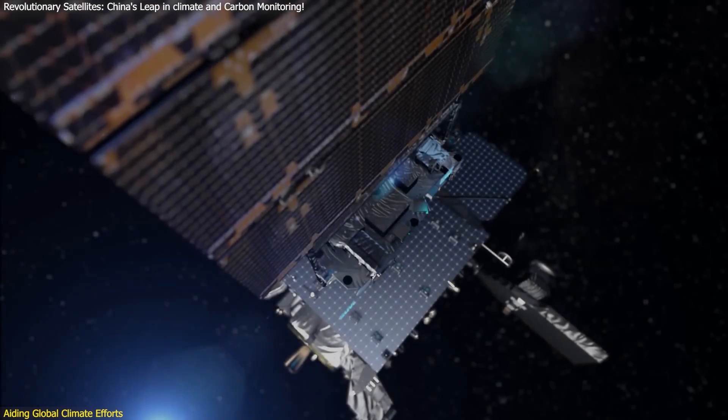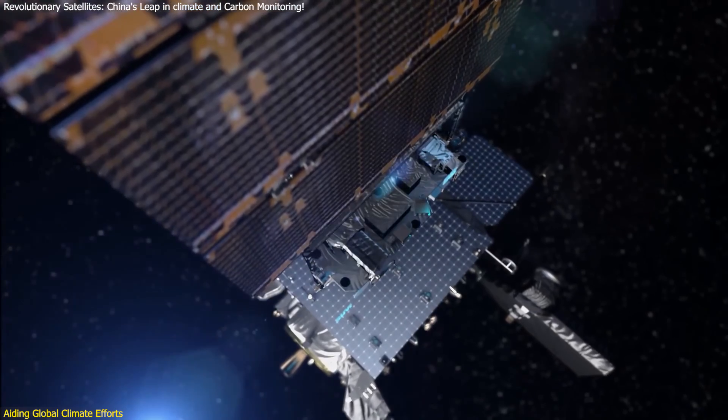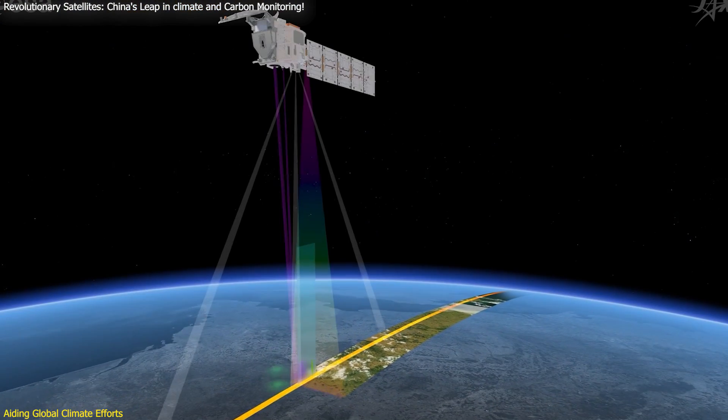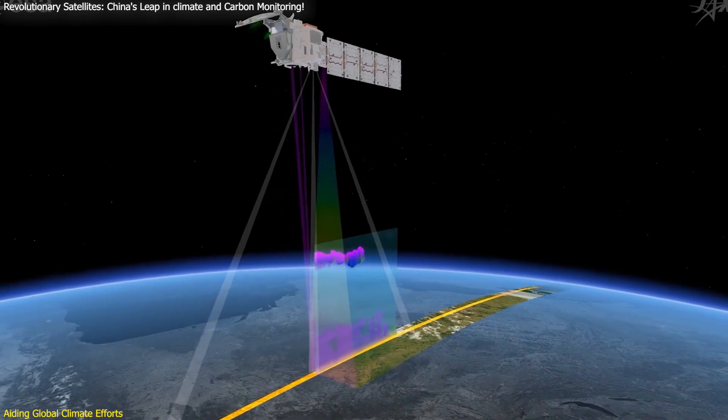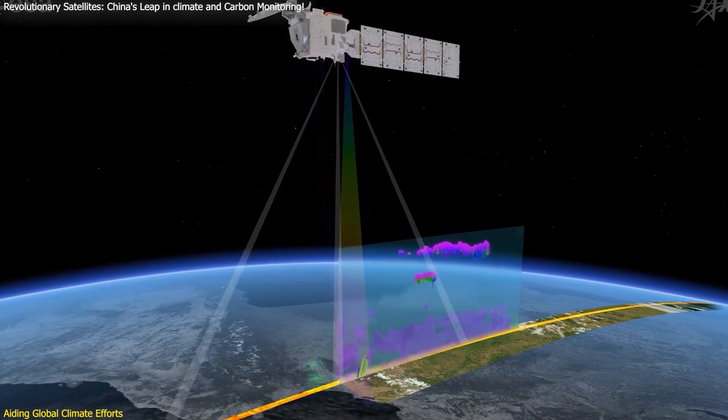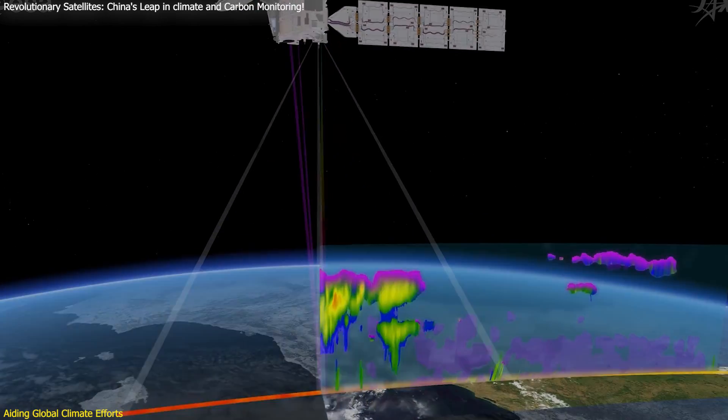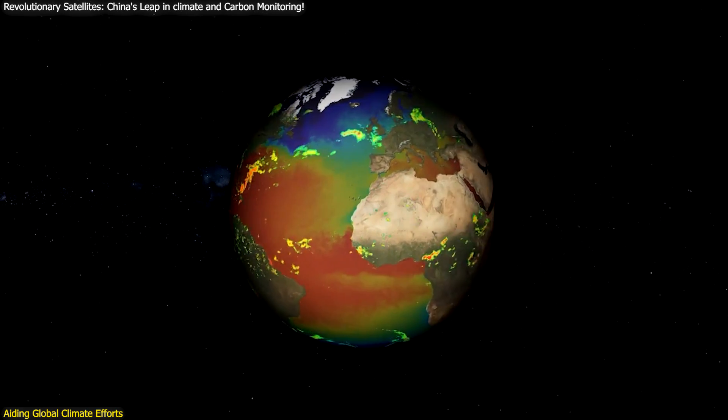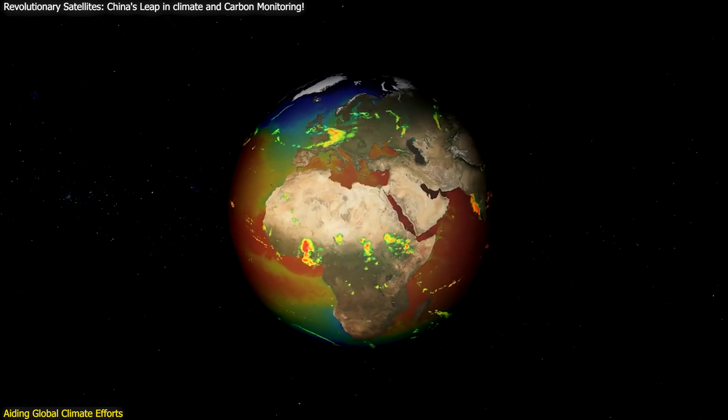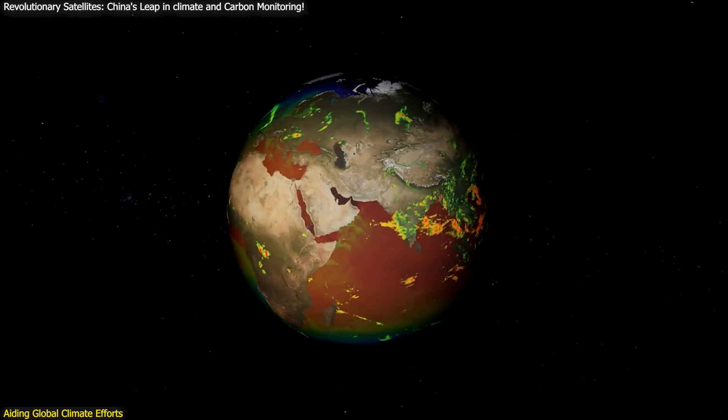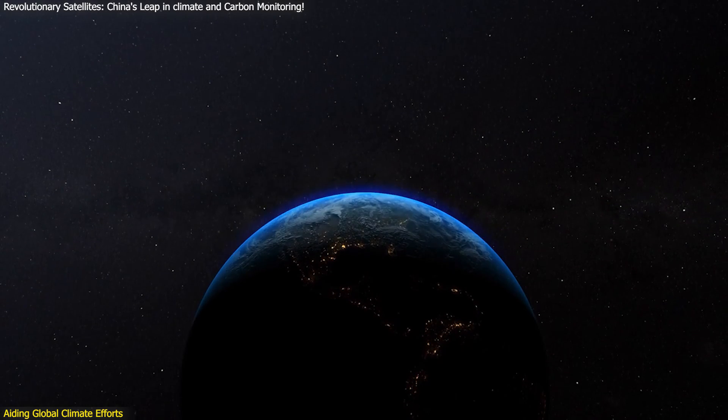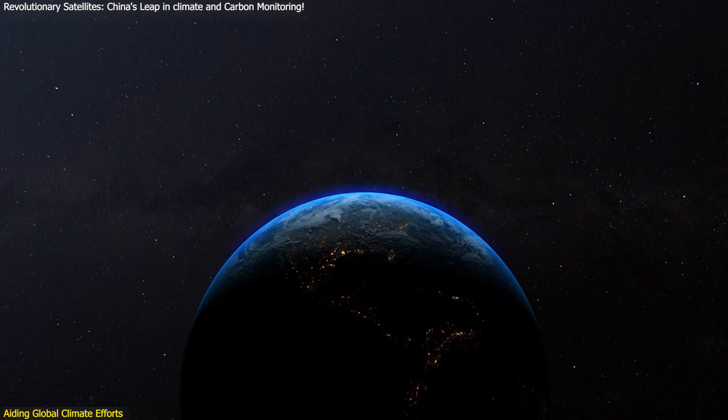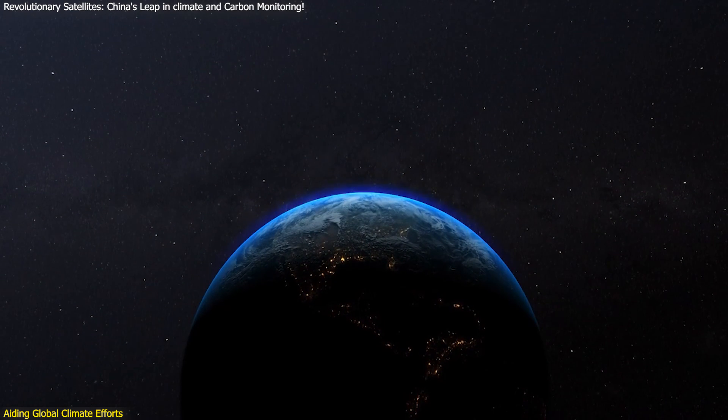These satellites are instrumental in addressing global climate change. The high-precision data they provide on carbon dioxide and other greenhouse gases are essential for understanding and mitigating climate change. By accurately measuring carbon emissions and tracking their sources, these satellites help identify the most significant contributors to global warming. This information is crucial for developing effective policies and strategies to reduce emissions and combat climate change.